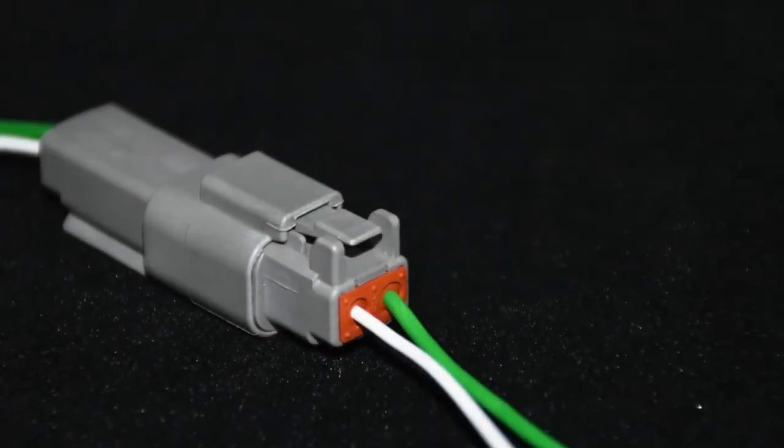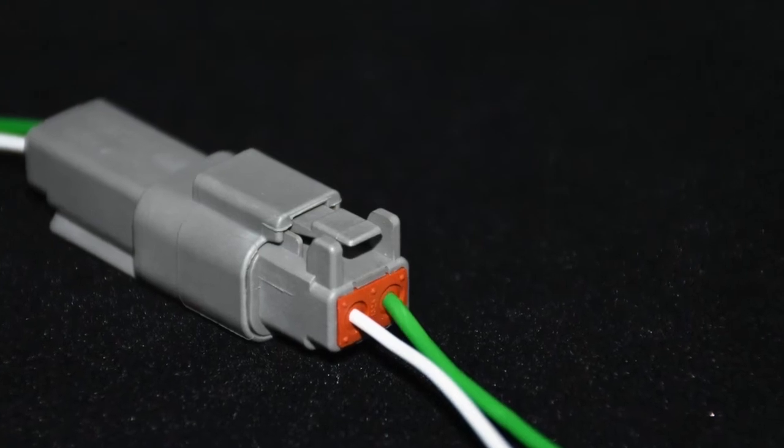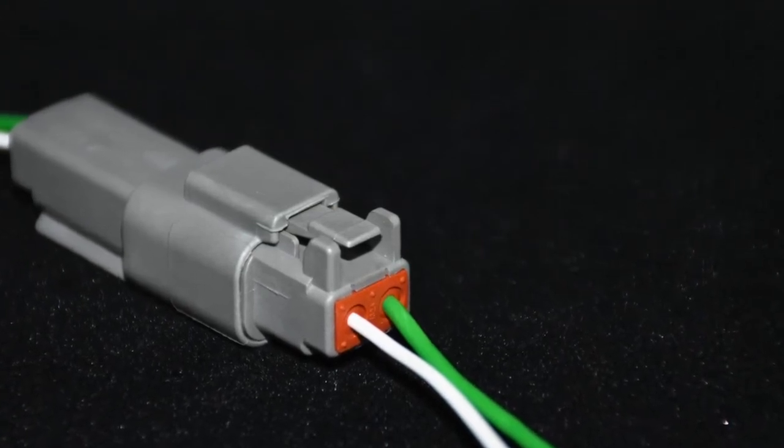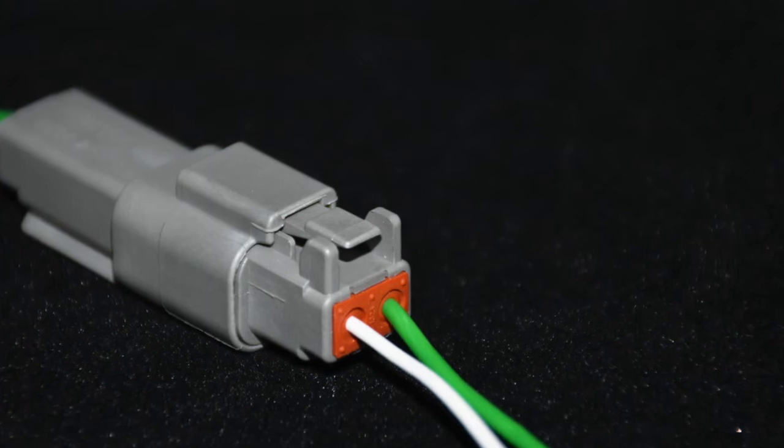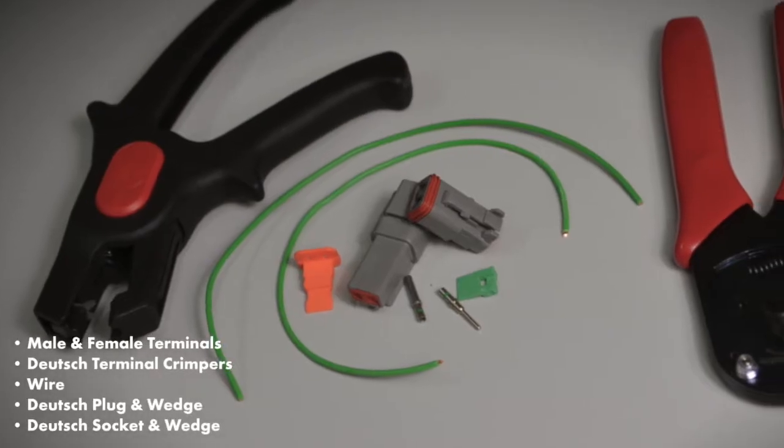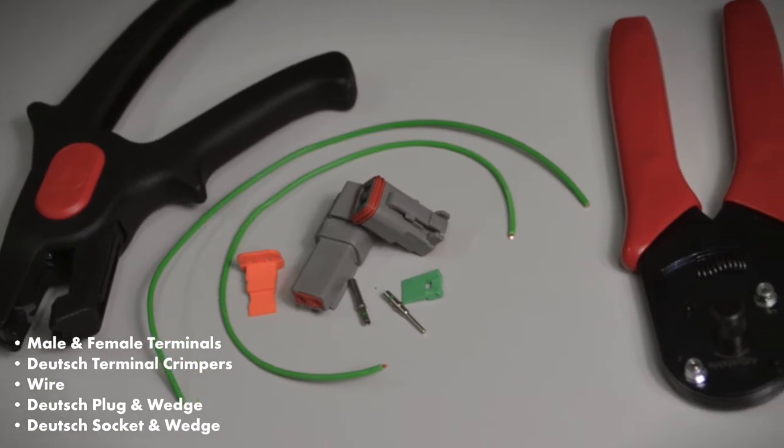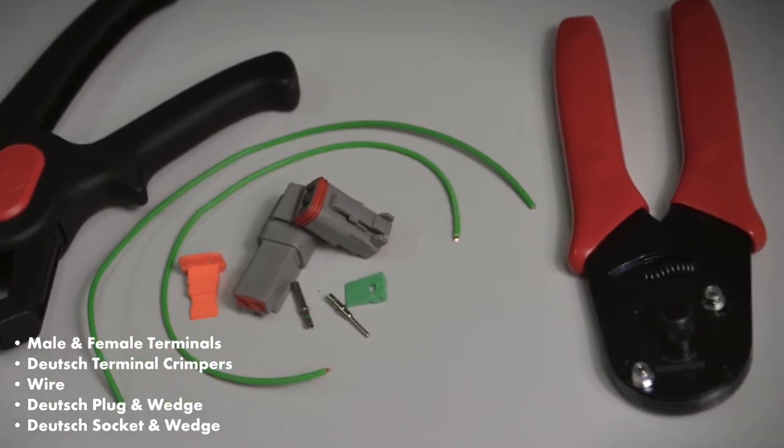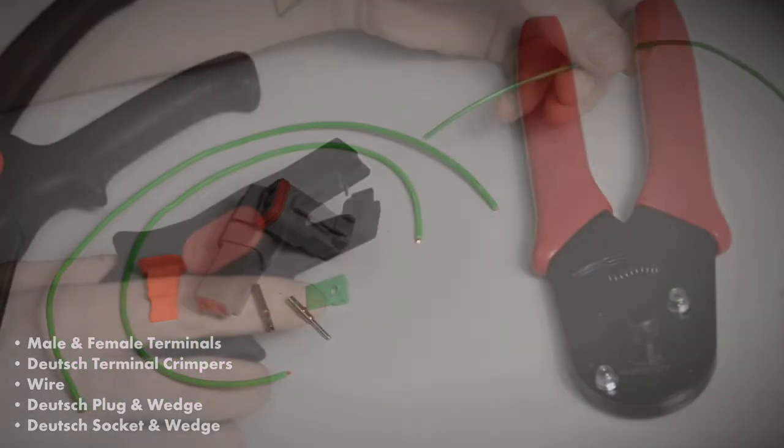This video will be demonstrating the crimping and assembling process of the new range of Deutsch connectors from Worth. To begin you will need male and female terminals, Deutsch terminal crimpers, wire, Deutsch plug and wedge, and a Deutsch socket and wedge.